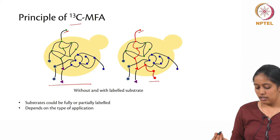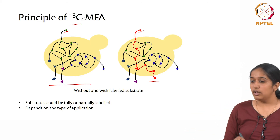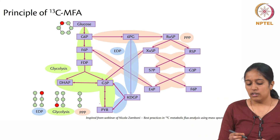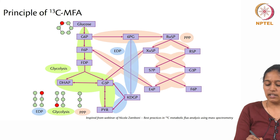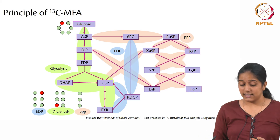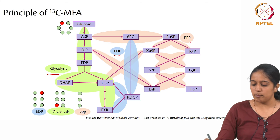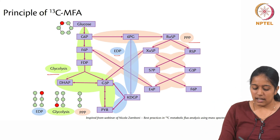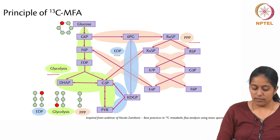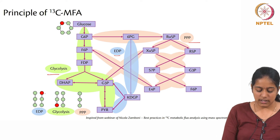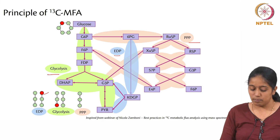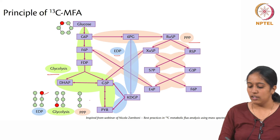The choice of substrate is determined by the application and it could be either fully or partially labeled. To understand in depth: say you have glucose labeled in the first position, and you have multiple pathways inside the cell. For converting glucose to pyruvate — the classic example — there are three different pathways: glycolysis, EDP, and the pentose phosphate pathway. If you observe a label in the first position you might infer it came from EDP; if you have a label in another position it comes from glycolysis; and if you have no labels at all it comes from the pentose phosphate pathway.